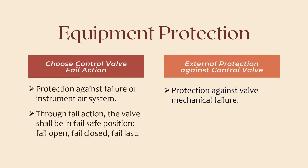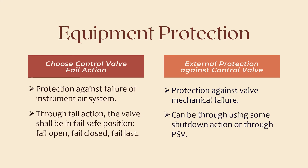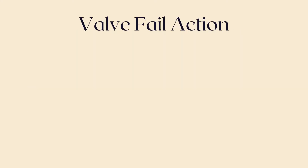External protection can be through a shutdown action, or through a pressure safety valve that shall handle the fluid in case of control valve failure. So if the air supply is cut, the valve should be in fail safe position. This is a parameter that should be considered in the design phase.